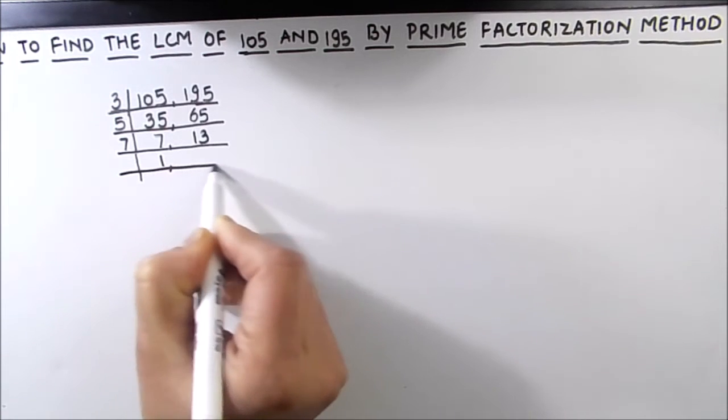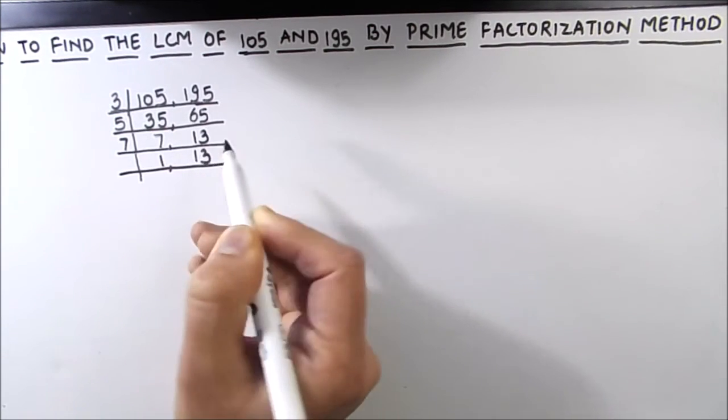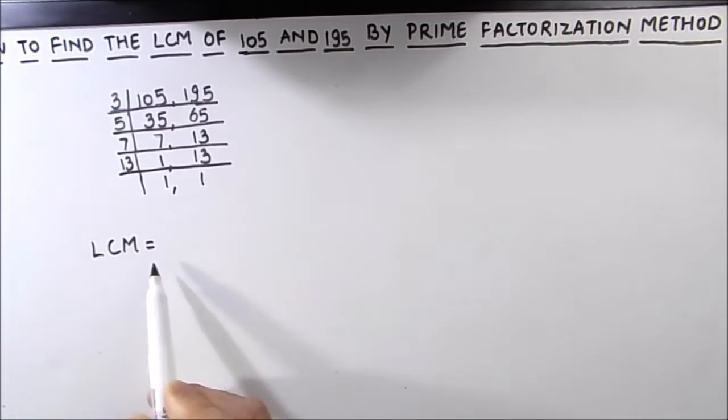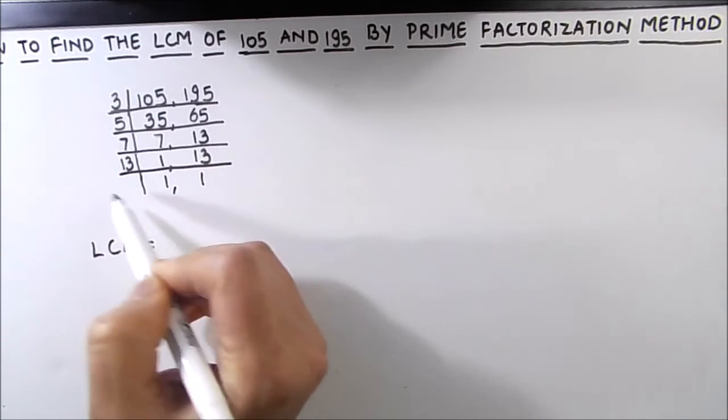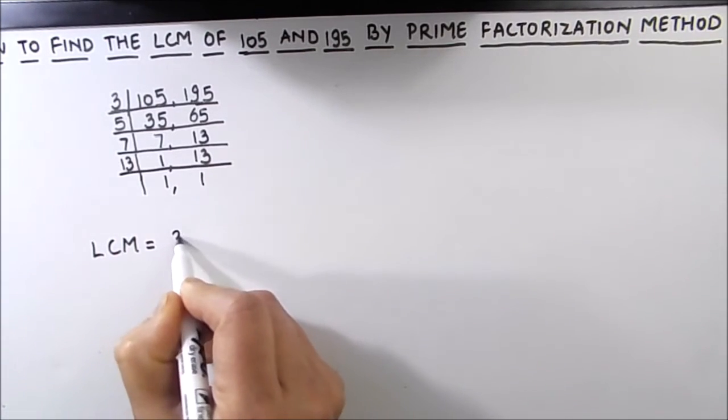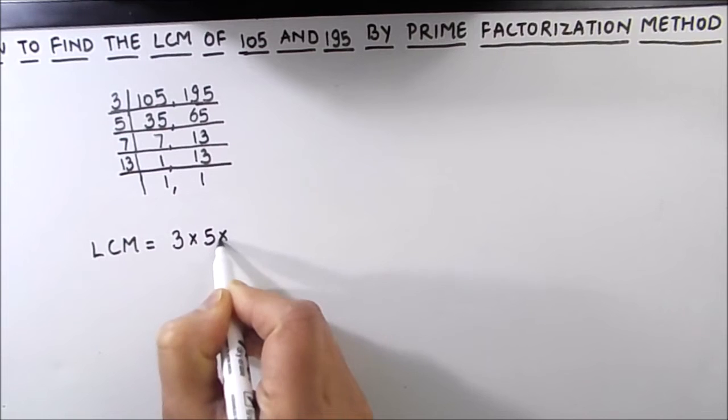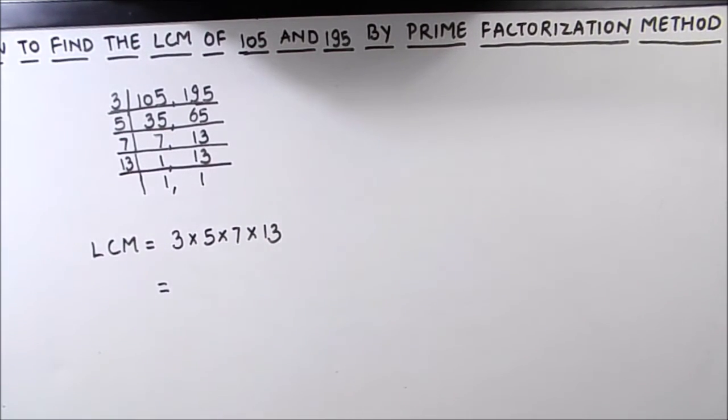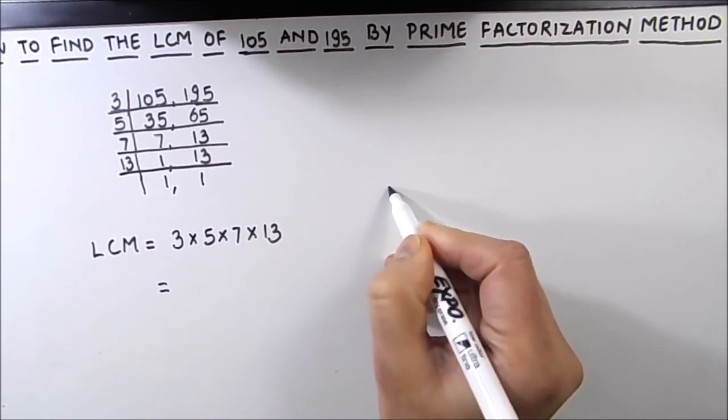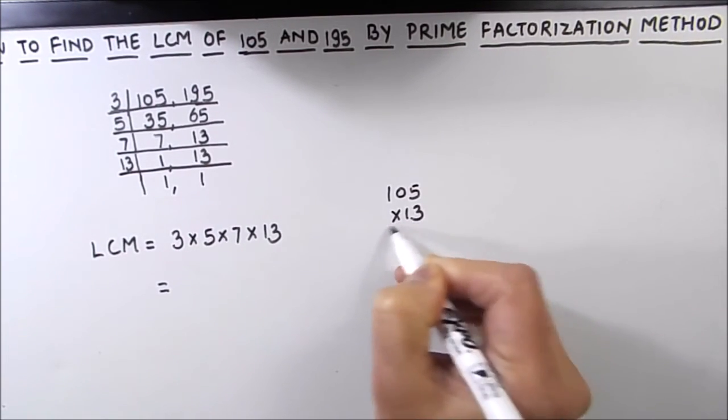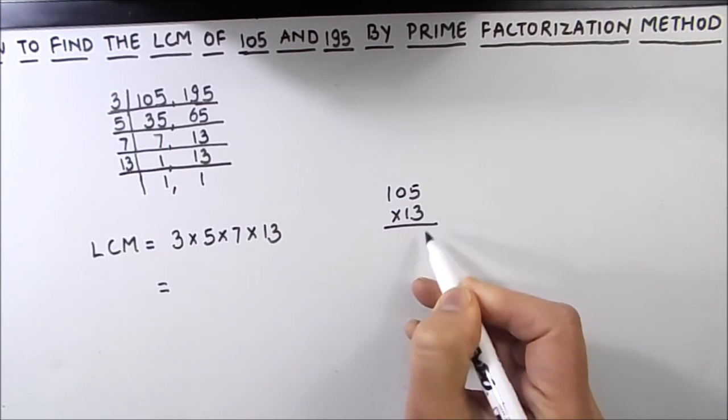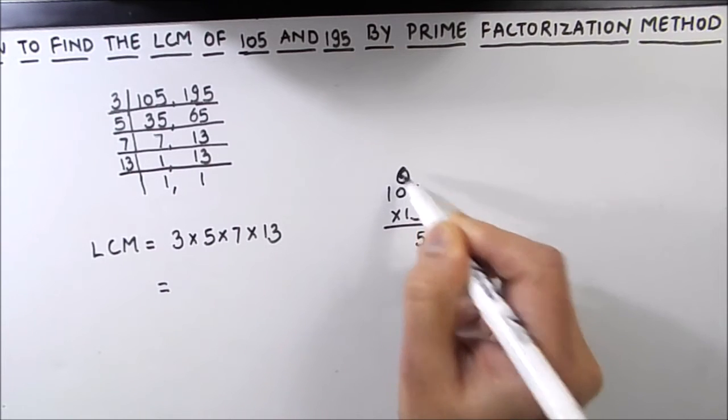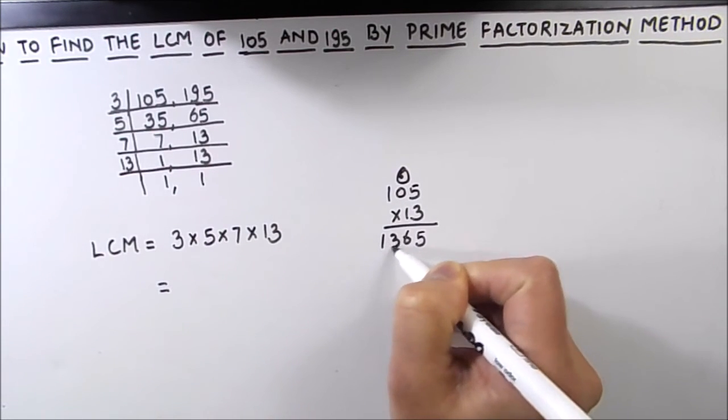So for finding the LCM we are going to take the product of the prime factors of both these numbers, which is 3 times 5 times 7 times 13, which equals 15 times 7 is 105, and 105 times 13 is—13 times 5 is 65, 6 is carried over. So this is 6, and 13 times 1 is 13.